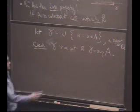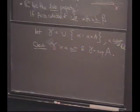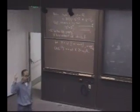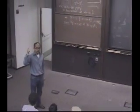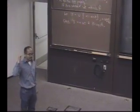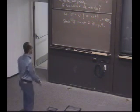So why is gamma a cut? There are three things to check. First thing to check is gamma is non-trivial. Secondly, it's closed downward. Third is? No largest member.